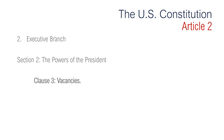Section 2, Clause 3 is regarding vacancies. The president has the power to appoint temporary officials to fill vacant federal offices without Senate approval if the Congress is not in session. Such appointments expire automatically at the end of Congress's next term.